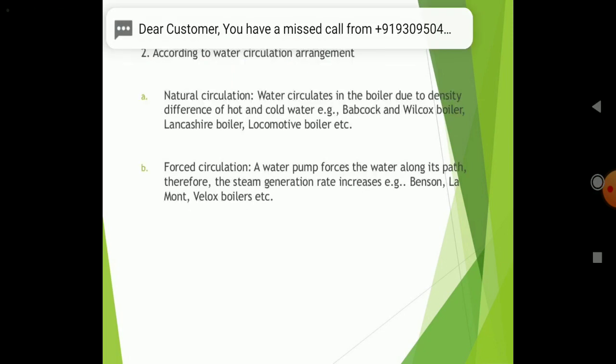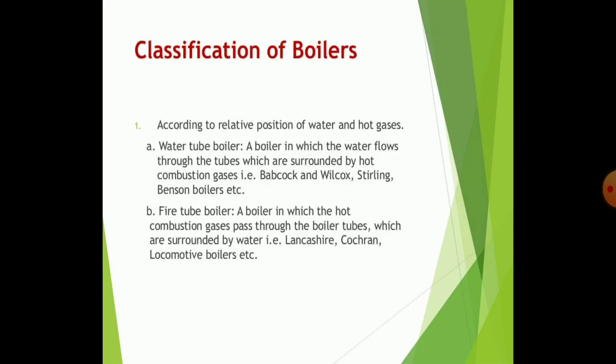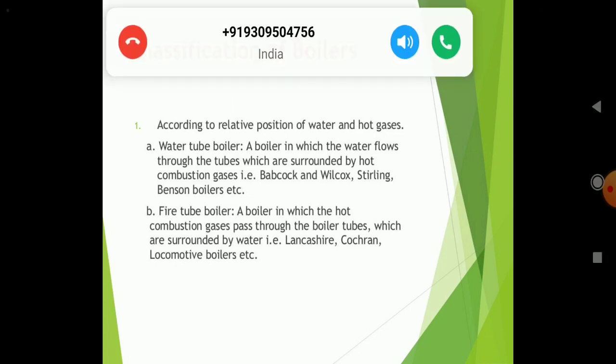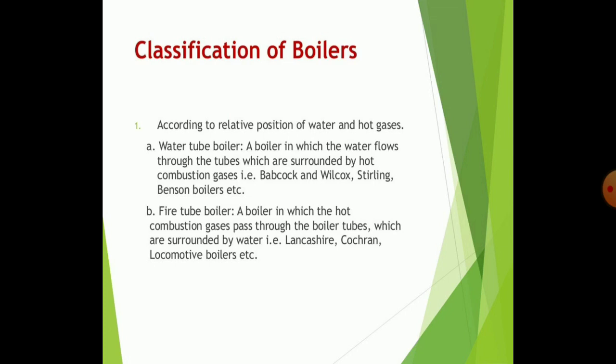Another type of boiler is the fire tube boiler. This is a boiler in which the hot combustion gases pass through the boiler tubes which are surrounded by water — for example, Lancashire and Cornish locomotive boilers. In this kind of boiler, the hot combustion gases pass through the tubes and water is circulated around the tubes. These methods were developed for obtaining high pressure, high temperature steam.